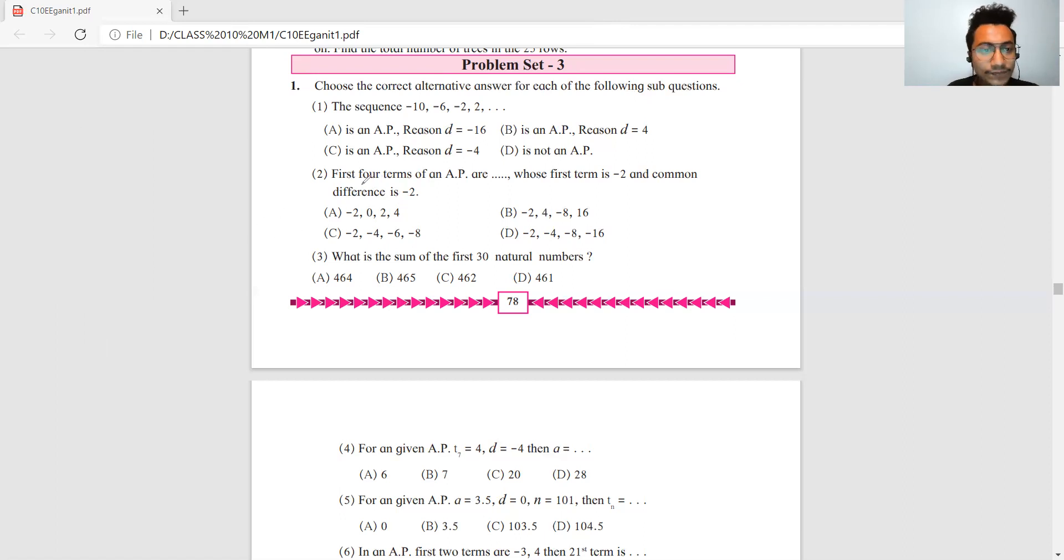Question number two: you're given the first four terms of an AP. We don't know which ones, but the first term is -2 and the common difference is also -2. So a is -2 and d is -2.